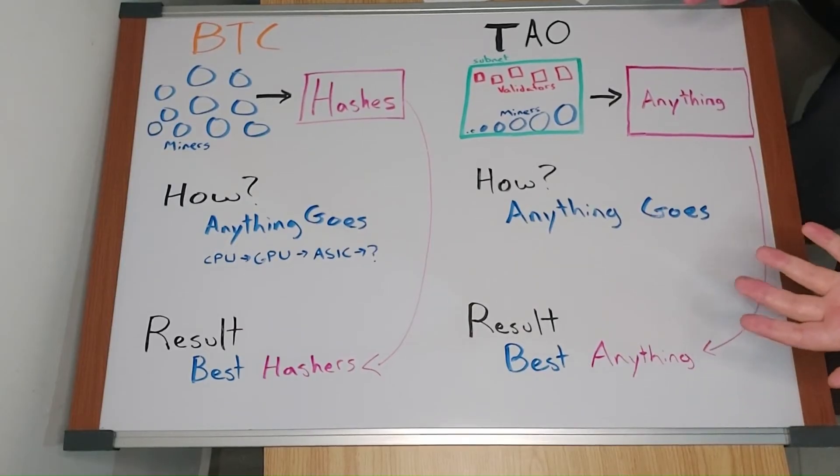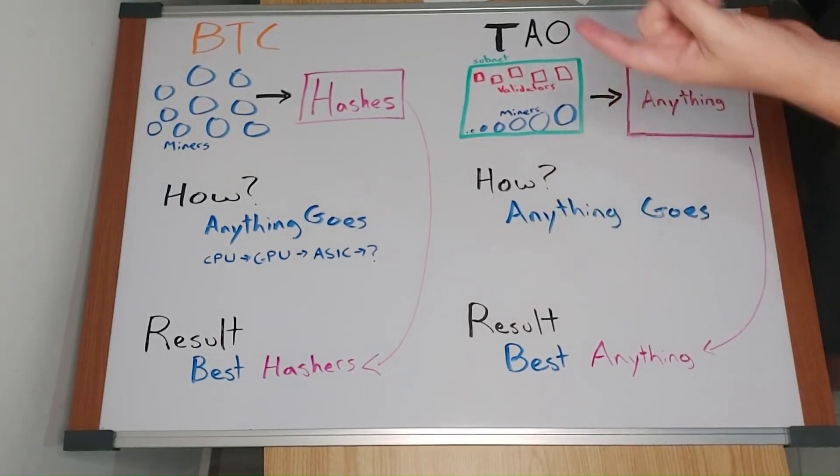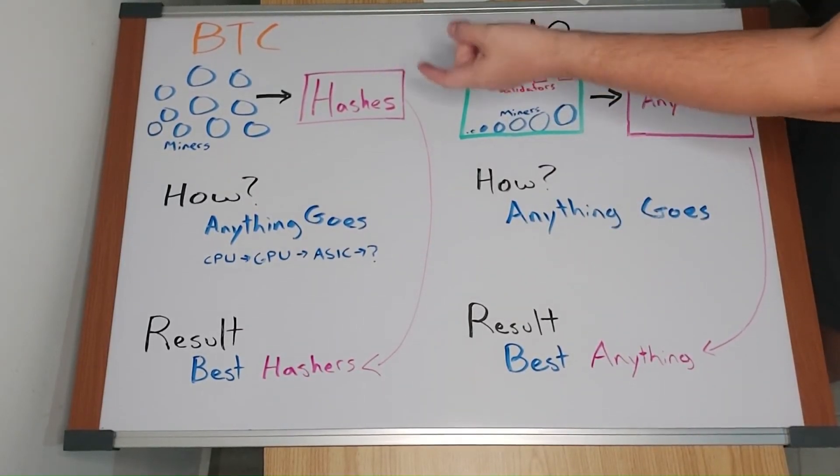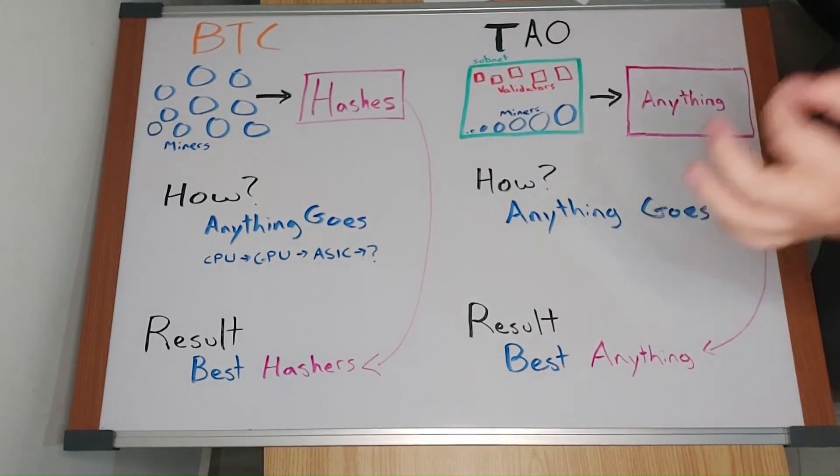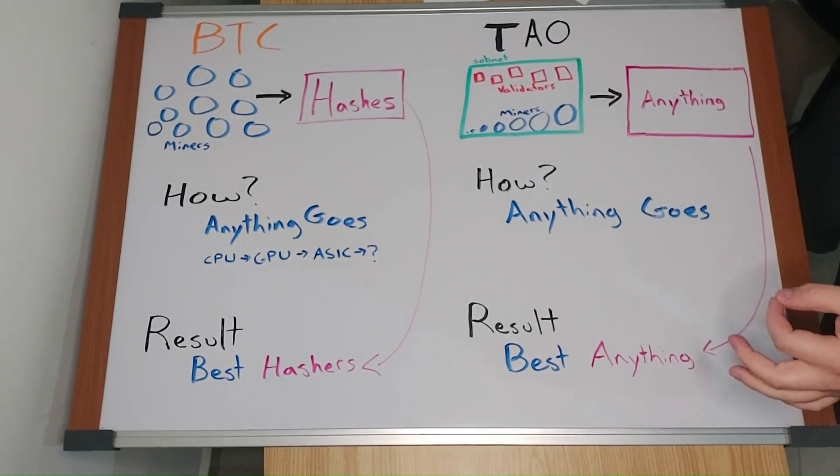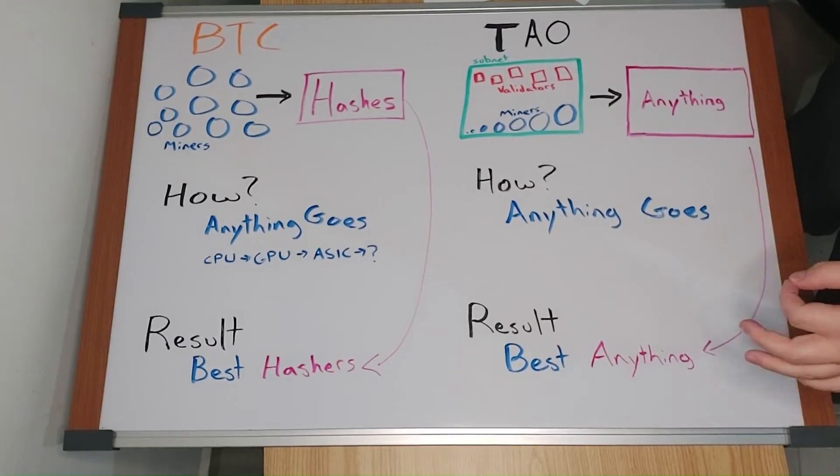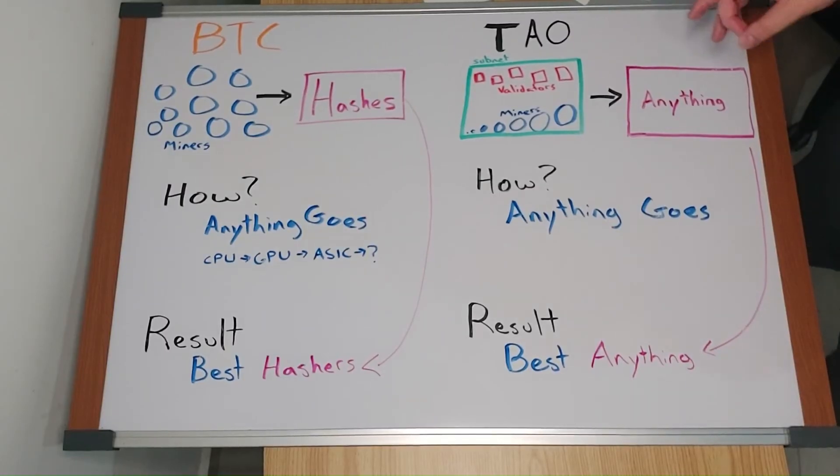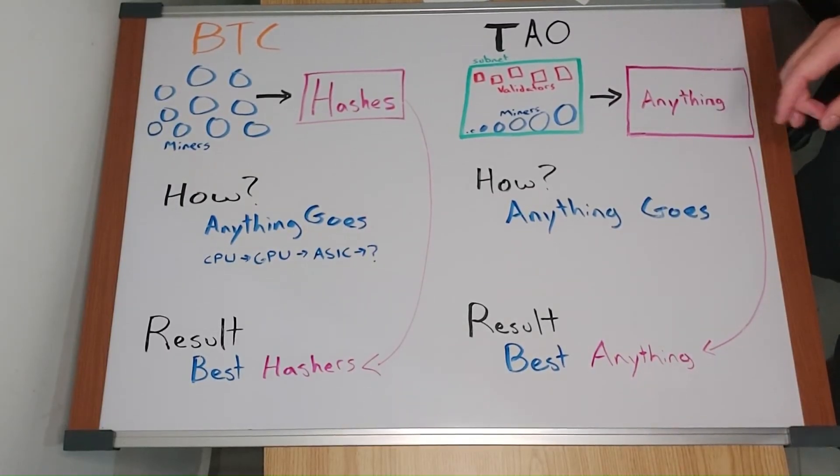Why does this work? For Bitcoin, it has produced the best way to guess hashes by aligning market incentives. In BitTensor, it's done the same way by aligning incentives to take advantage of the immense value in the world's market.